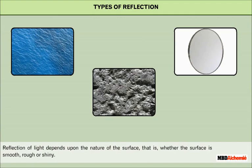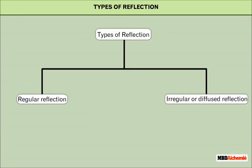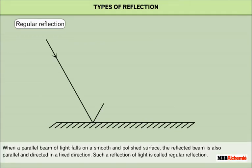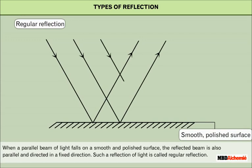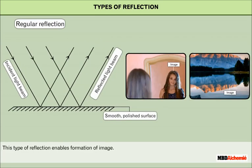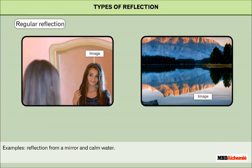Reflection of light depends upon the nature of the surface, whether the surface is smooth, rough, or shiny. Depending on the surface, reflection of light can occur as regular reflection and irregular or diffuse reflection. When a parallel beam of light falls on a smooth and polished surface, the reflected beam is also parallel and directed in a fixed direction. Such a reflection of light is called regular reflection. This type of reflection enables the formation of an image. Examples include reflection from a mirror and calm water.